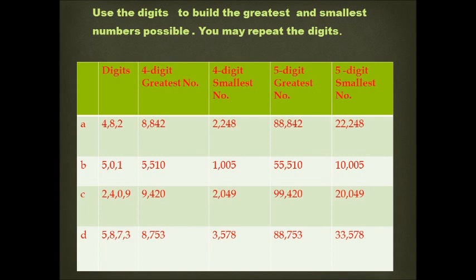Part C: the given digits are 2, 4, 0, and 9. The greatest four-digit number formed is 9,420 and the smallest number formed is 2,049. The greatest five-digit number formed out of these digits is 99,420 and the smallest five-digit number formed is 20,049.